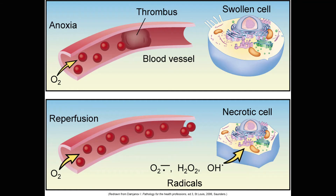So here is that process again. We have the anoxia being caused in this case by a thrombus, and the cell is going to start to go through those changes of ischemia, injury, and necrosis. We had those three things going on: the decrease in the sodium-potassium pump causing swelling of the cell, the decrease in the calcium pump causing damage to the mitochondria — meaning we're decreasing the energy the cell has to work with — and then we're having acidosis, which is going to cause further damage to the cell. Now we add oxygen to this mix, and we start to produce these oxygen free radicals.